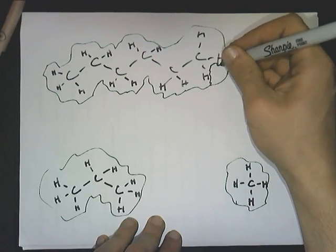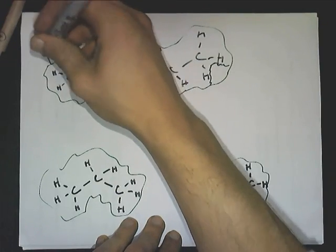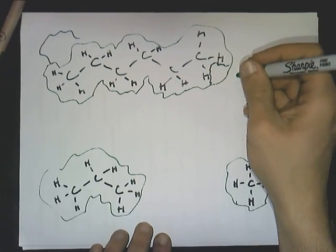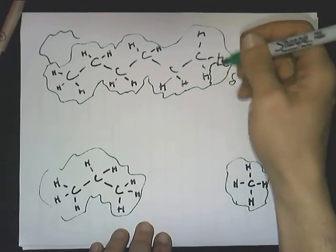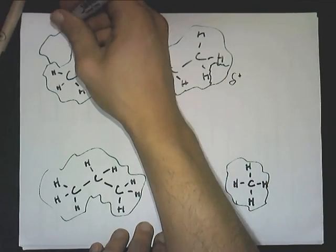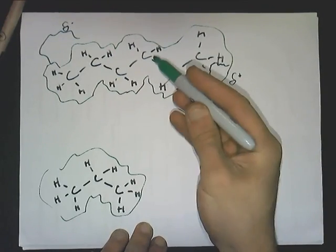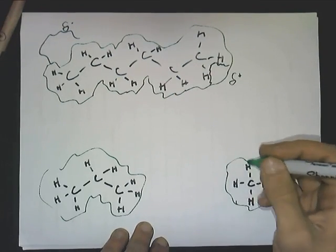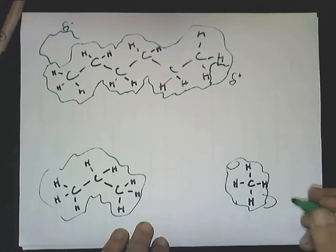The electron cloud might dip away there and get expanded out here. In that case, we would have a partial positive charge there as it recedes closer to the nuclei, and a partial negative here. There are more spaces to induce a dipole. For methane, it's very small — we've only got little spots where we can induce a dipole.